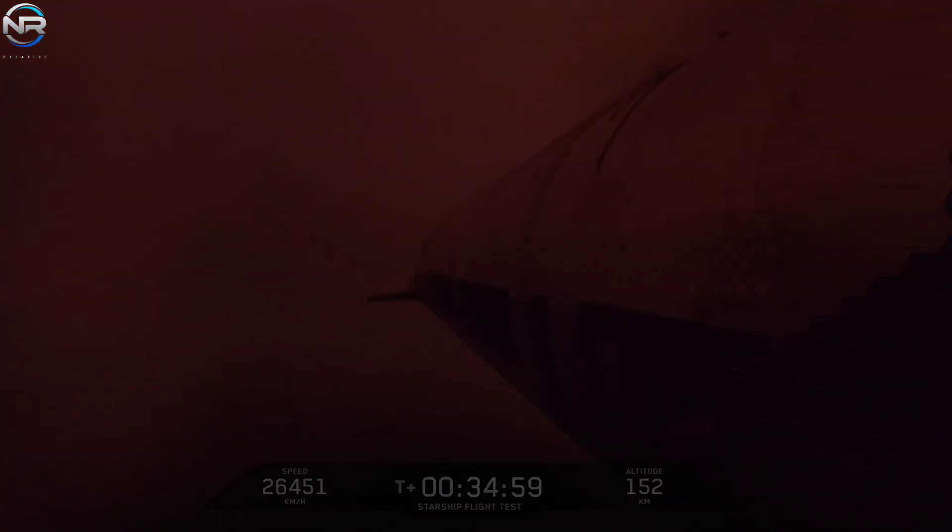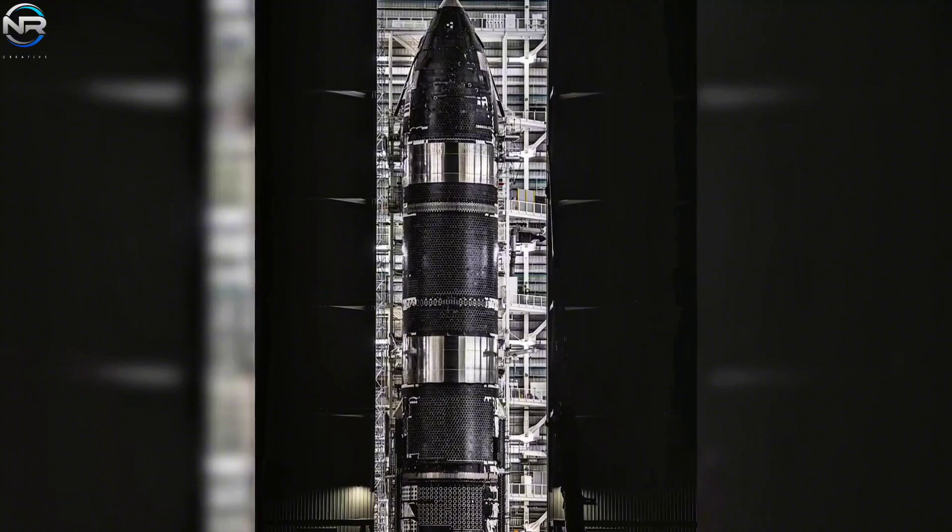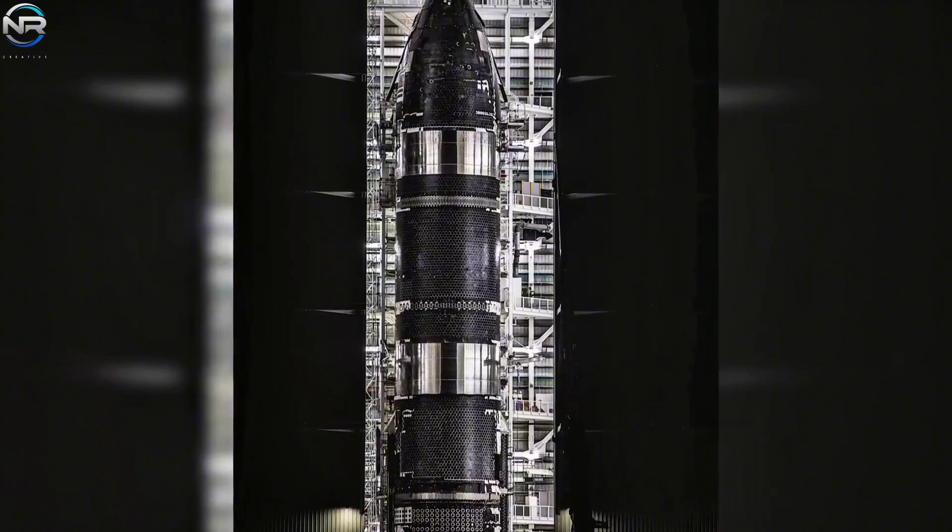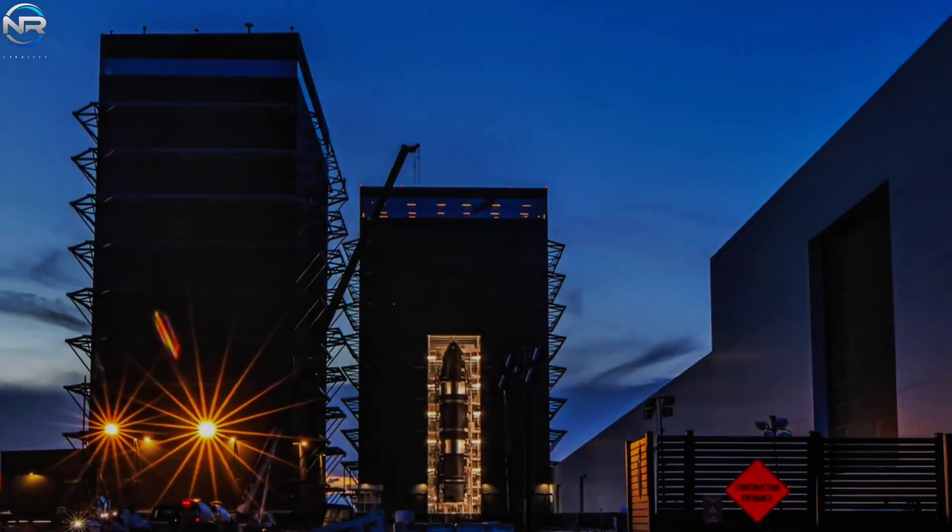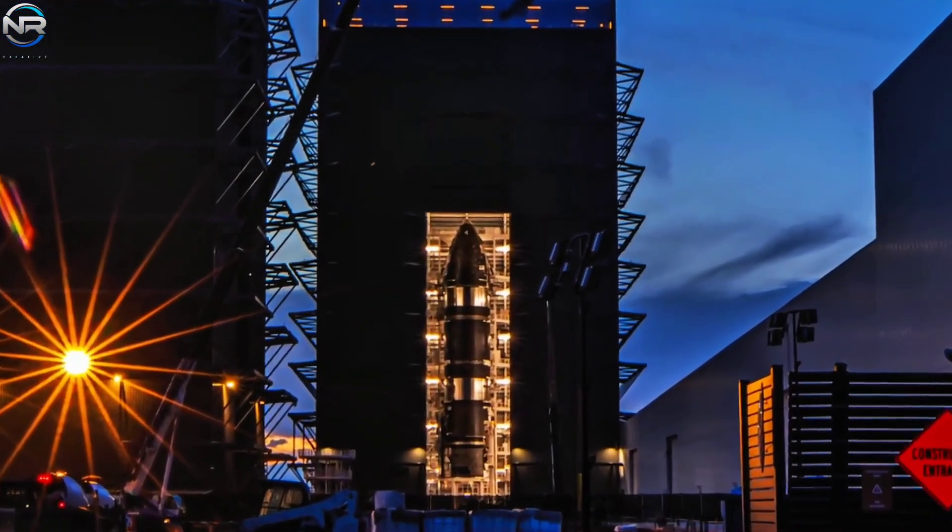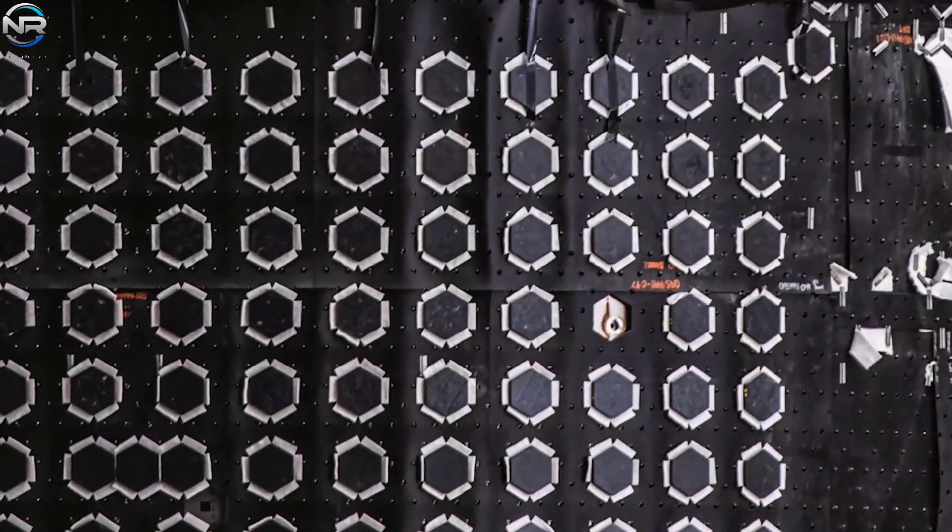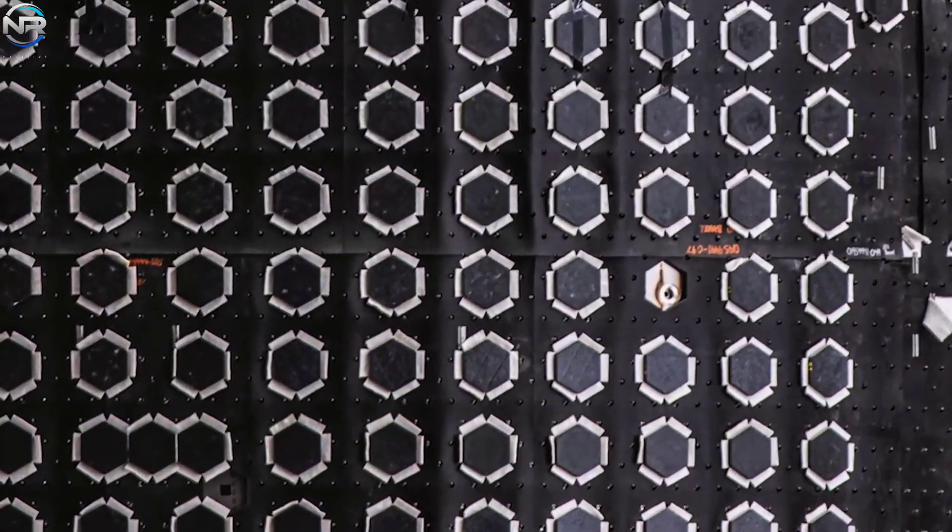Recent photos of spacecraft 37, now in Megabay 2 for final inspection and installation before the static fire test, have revealed some interesting new updates. One of the biggest changes is in the A section of the spacecraft, where the heat shield tiles now have small white circular markings. This unique feature wasn't found on previous models, and likely serves to strengthen the tile system at points most vulnerable to high heat.